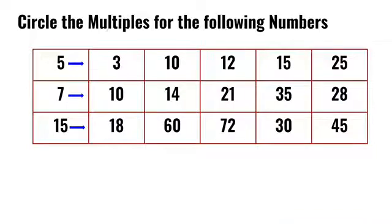Circle the multiples for the following numbers. First, we have to circle the multiples of 5. 5 twos are 10, 5 threes are 15, and 5 fives are 25. So 10, 15, and 25 are some of the multiples of 5.